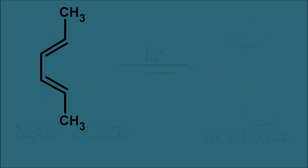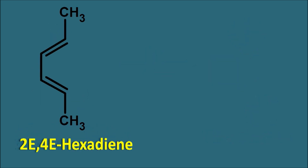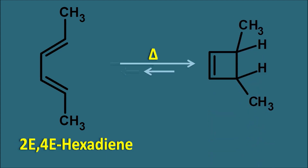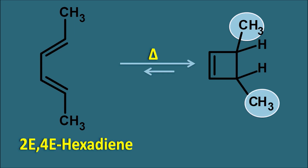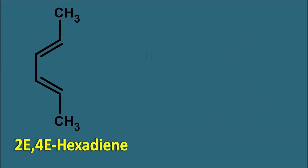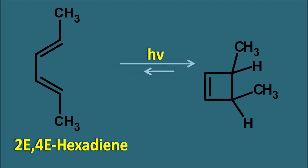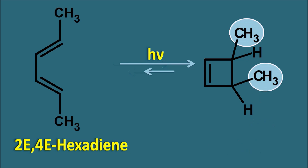Now let us take the other configuration — 2E4E hexadiene. When we supply thermal energy it gives a product where the methyl groups are on opposite sides, so it gives the trans isomer. And when we supply photo energy to the same reactant, it gives a product with cis configuration. The nature of the product depends on the source of energy we supply as well as the configuration of the reactant.